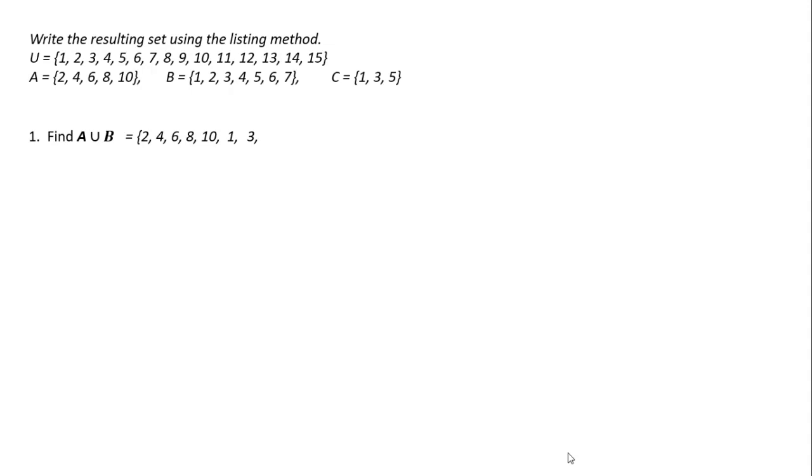We add B — one and three were not in A, so we include those. Seven would be our last one. So the union of A and B is: two, four, six, eight, ten, one, three, five, seven. The order doesn't matter, but we do not want to include duplicates. There was a two in set A and a two in set B — we only include it one time.